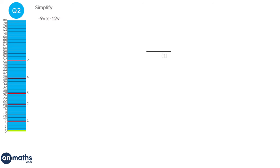Whenever we multiply two negatives we always get a positive, so we know our answer will be positive. We're going to do 9 times 12, which is going to be 108, and v times v, which is going to be v squared.